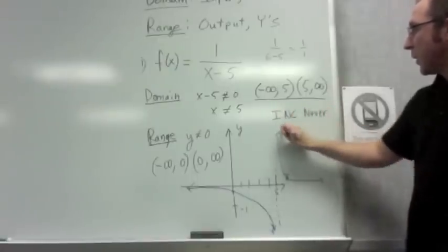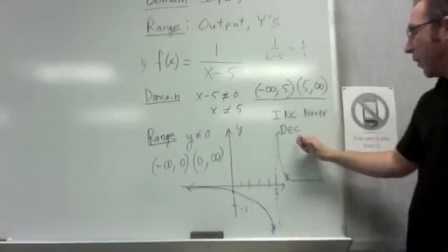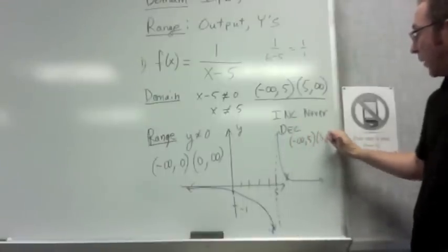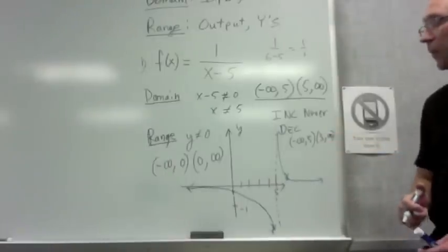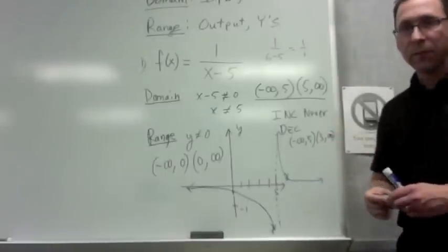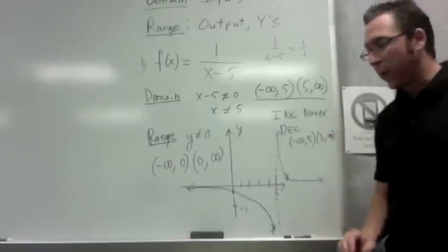And then for decreasing is falling from negative infinity to 5 and then from 5 to infinity. All right. A quick little tutorial for you. Hope it straightens out some of the questions you might have.